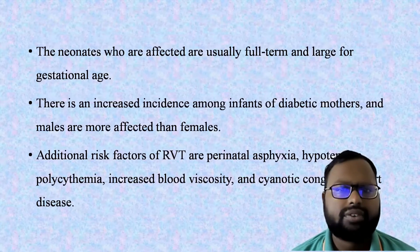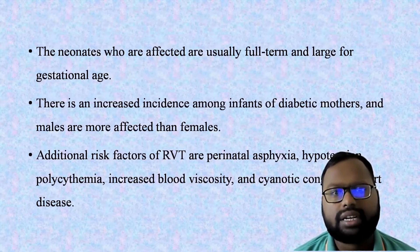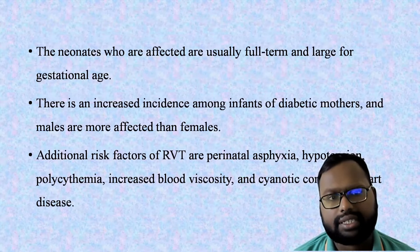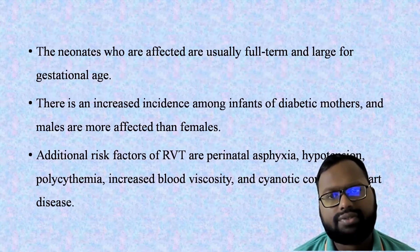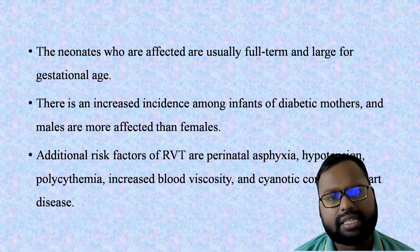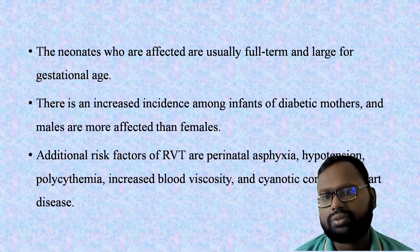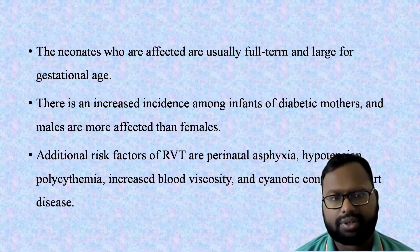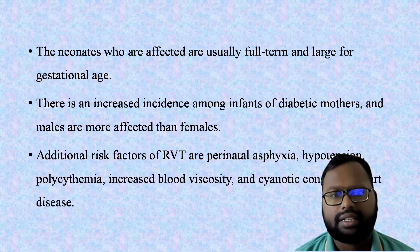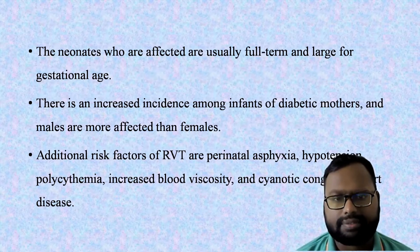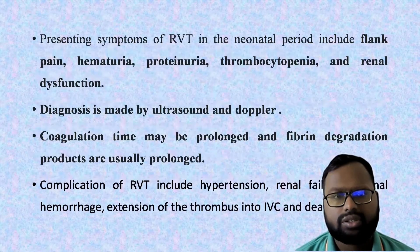The affected infants are usually full term and large for gestational age. There is increased incidence among infants of diabetic mothers, and males are more affected than females. Additional risk factors for renal vein thrombosis include perinatal asphyxia, hypotension, polycythemia with increased blood viscosity, and cyanotic congenital heart disease.